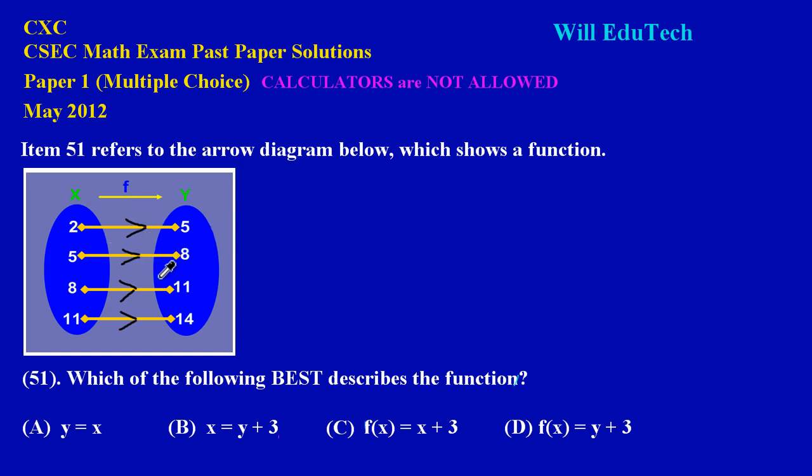In 51 they're asking which of the following best describes the function. Now let's quickly look at this. If you notice in the first option, option A that they gave us, option A is saying y is equal to x. So obviously if y is equal to x, then any value that y takes, x must take that same value.